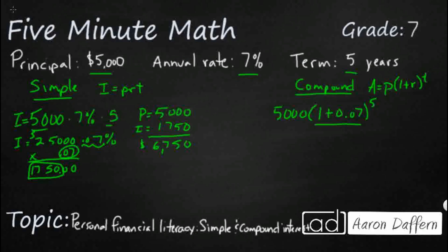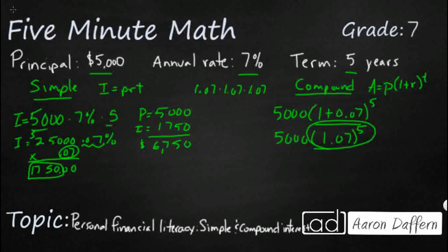So we have 5,000 times 1.07 to the power of 5. Our order of operations says we need to go ahead and raise 1.07 to the power of 5 first. Now here's the tricky part — that's going to be difficult without a calculator. That is not 1.07 times 5; it is 1.07 multiplied by itself 5 times. I went ahead and calculated that out and rounded to the nearest hundredth: that is 1.40.